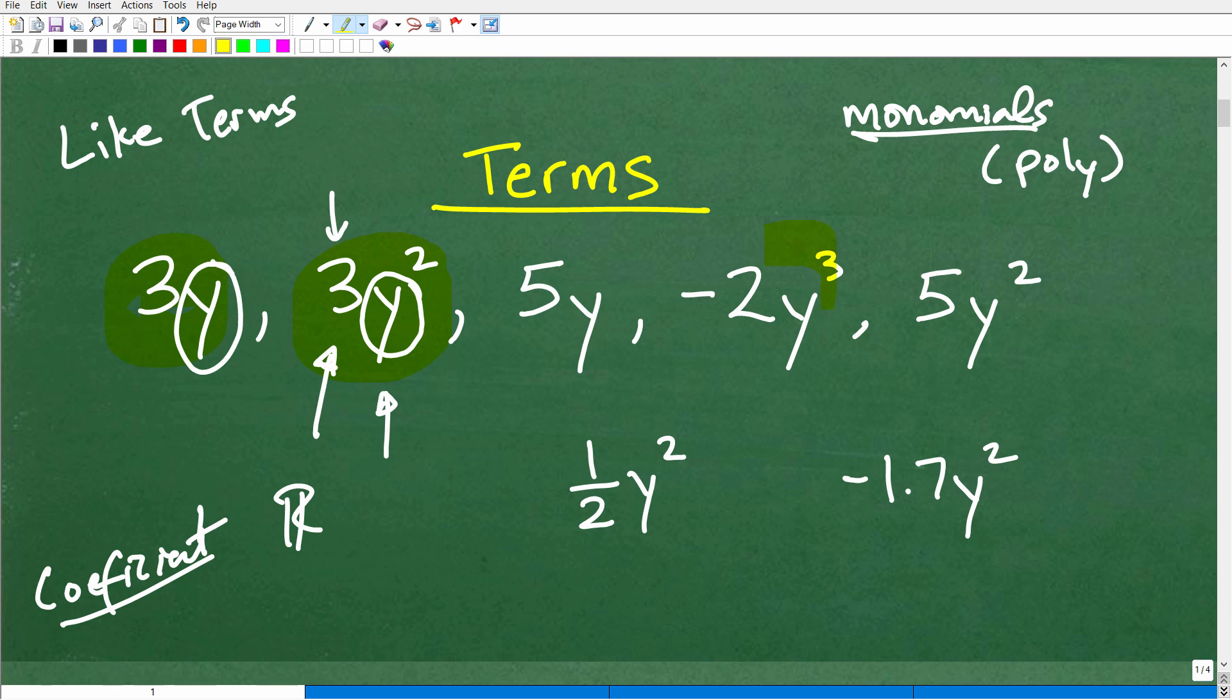So let's take a look at this one right here. So what is the variable? Well, clearly it is y. The power or the exponent is 3. It's y cubed. And what's the coefficient? Negative 2.